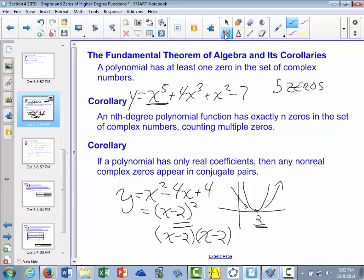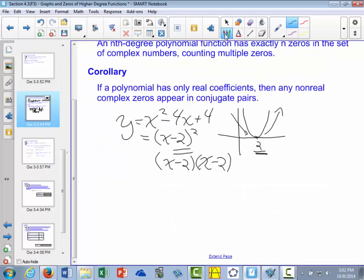Now, our second corollary here says if a polynomial has only real coefficients, then any non-real complex zeros appear in conjugate pairs. And what that means is that if we do have complex zeros in the form a plus bi, well, then we will also have a zero in the form a minus bi, the complex conjugate. So these two will always show up together in pairs, conjugate pairs.